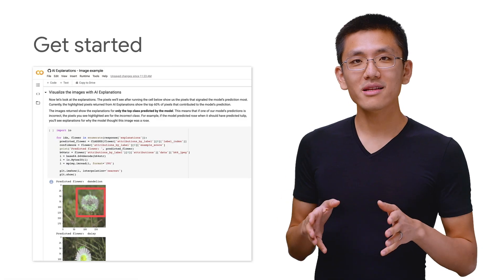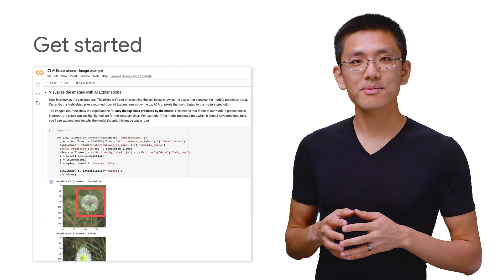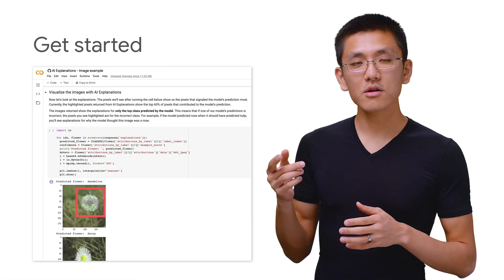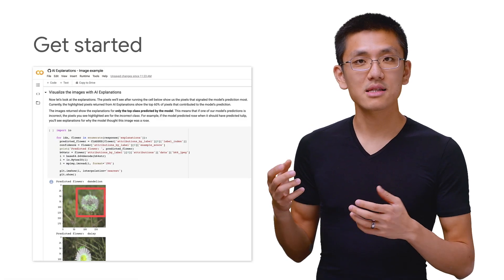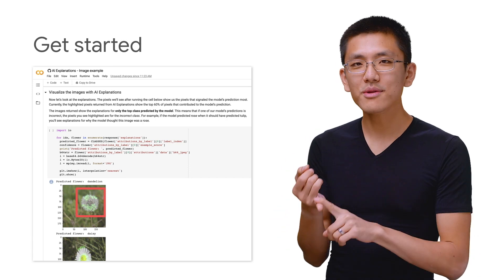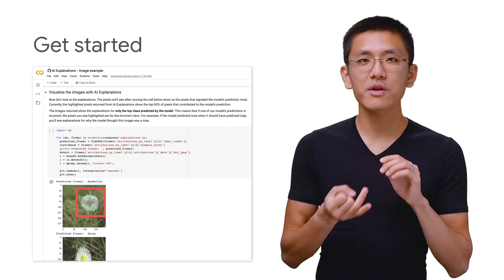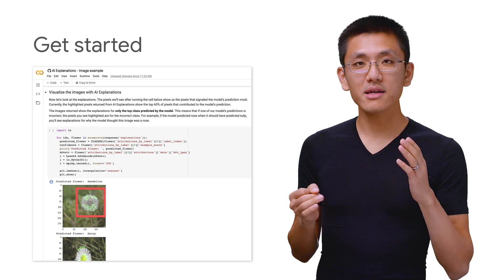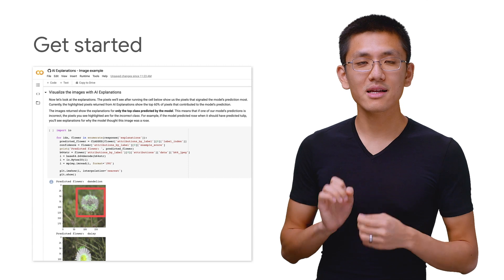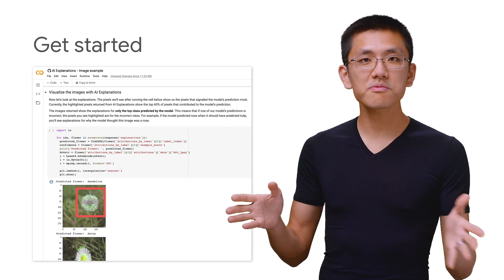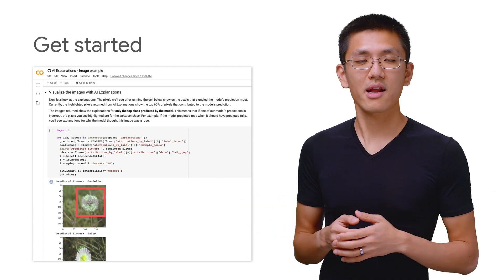If you are ready to try out AI Explanations for your deployed model, head on over to the guides in the documentation. There's one for tabular data and another one for image data. And best of all, they're presented as Colab notebooks, so it's super easy to try it out.